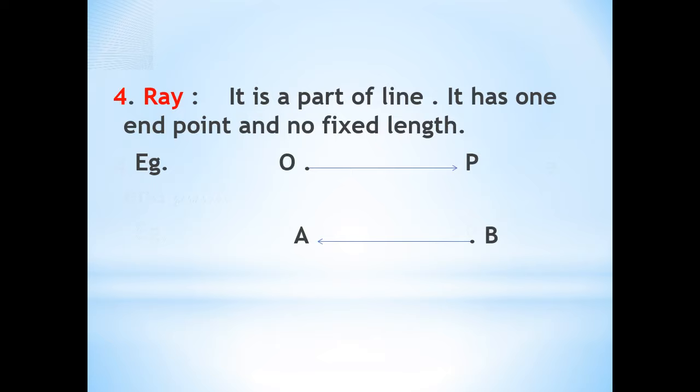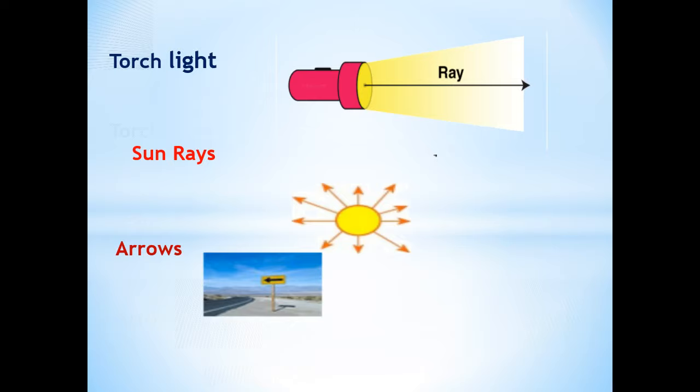Similarly, the ray BA has the starting point B and no endpoint. A few examples of the ray are torch light, rays of the sun, and arrows.